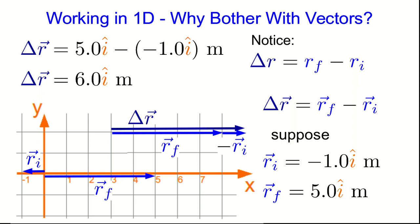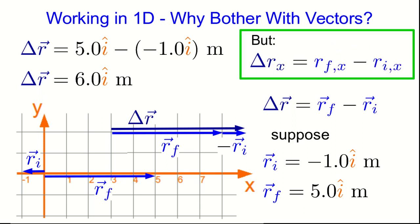That's no longer true. So apparently this doesn't always work, and so we shouldn't use it. We only use rules if they always work. What is true, though, is that the x component of delta r is the subtraction of the x components of r_f and r_i. And that's just what we've already seen as how we do vector addition and subtraction.